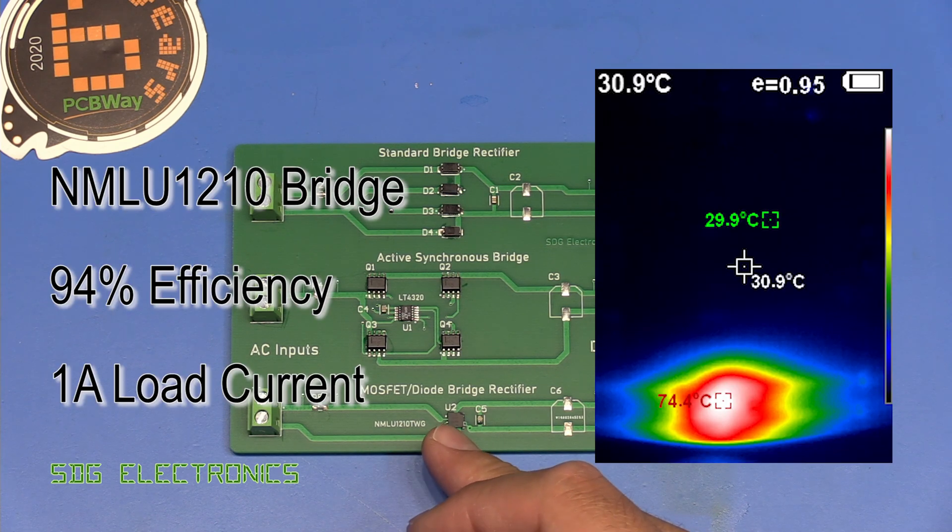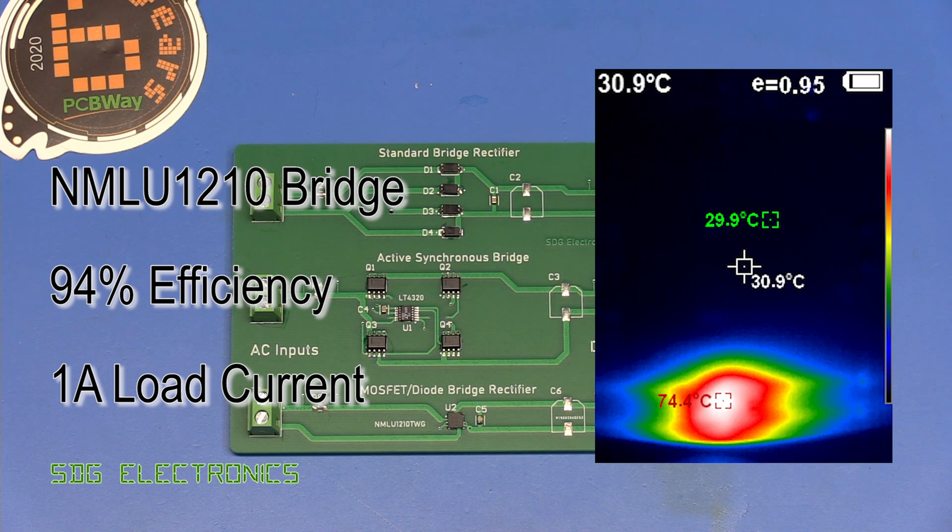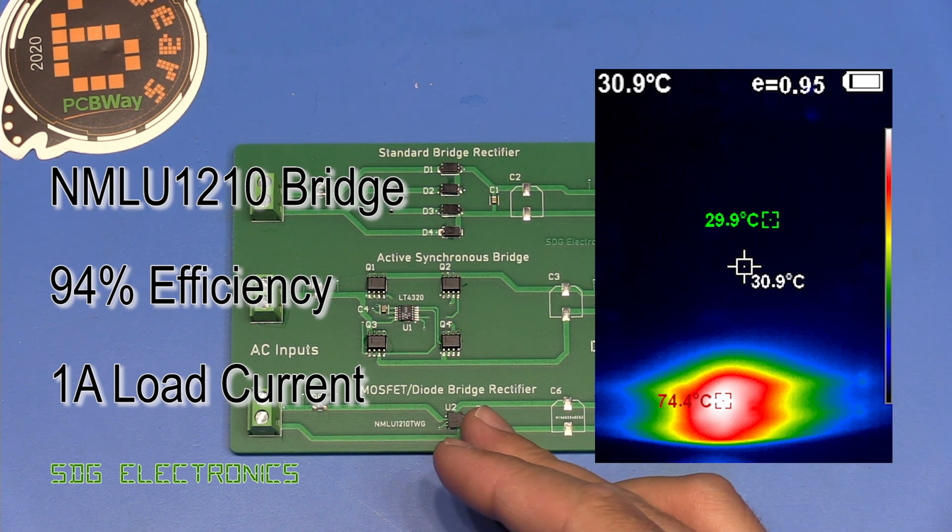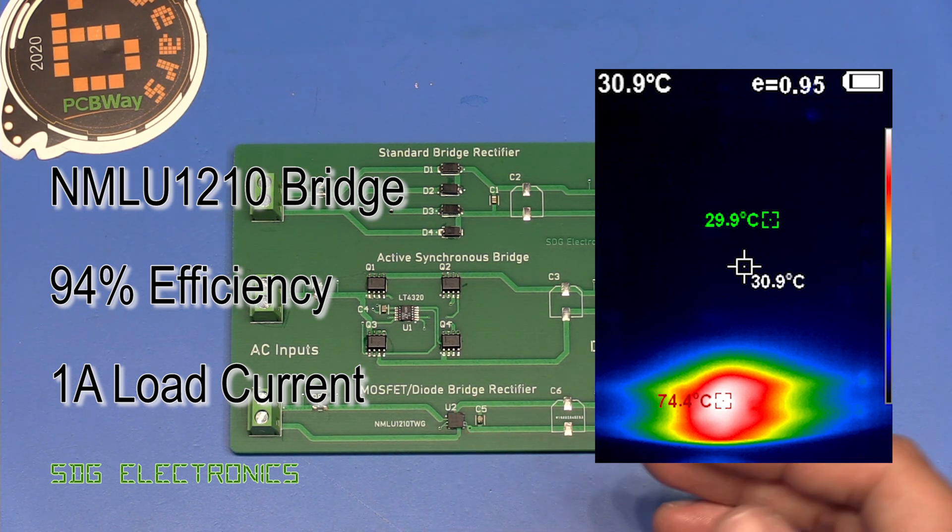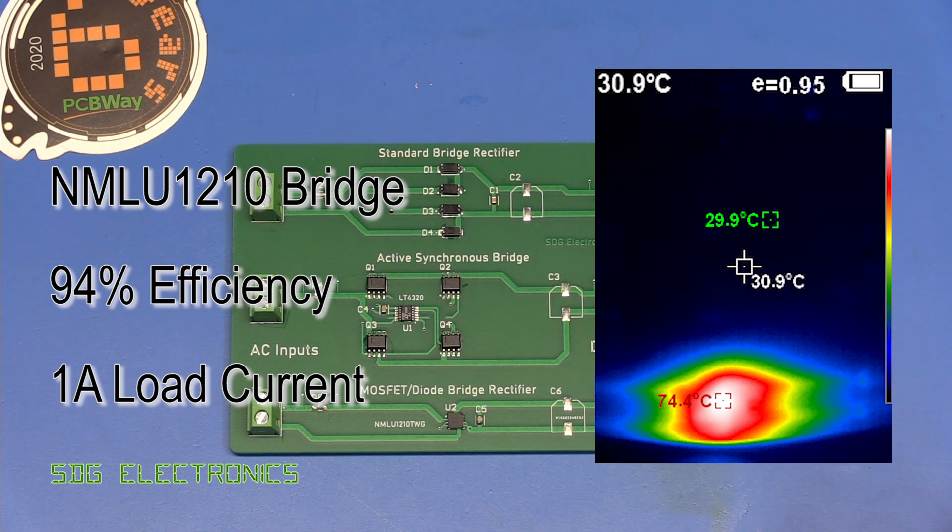The hybrid MOSFET diode bridge rectifier was running still quite warm, 74 degrees C, but we were only losing 6% of our energy in the actual chip itself. And because it's quite a small chip, obviously, the heating is a lot more dense. So this will get quite warm. But yeah, it was about 94% efficiency.